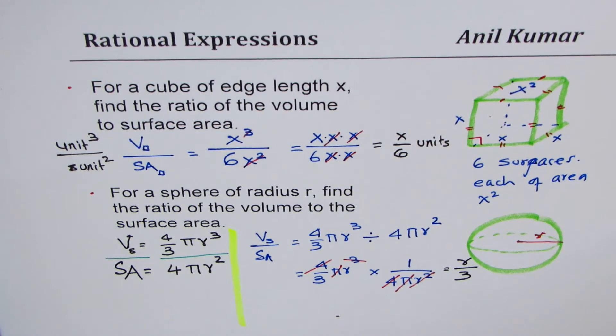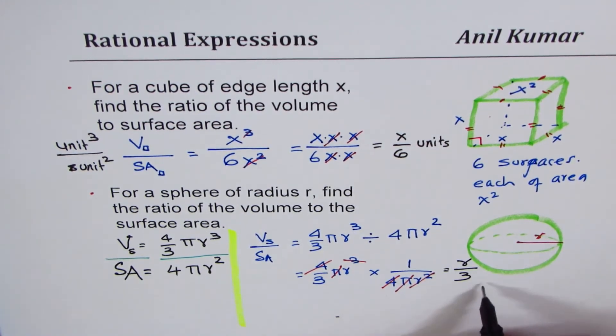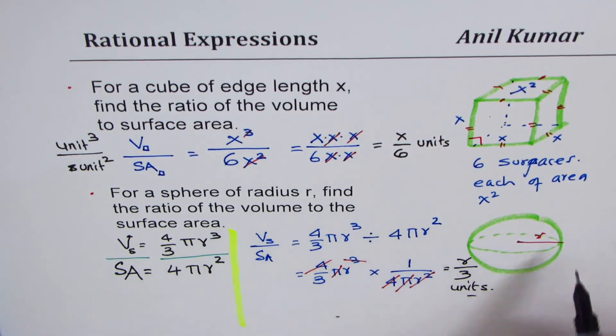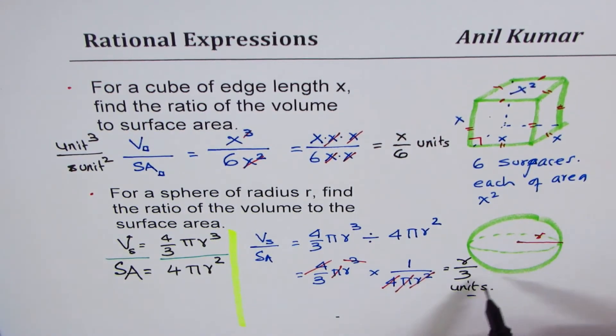And the units again will be just units. It's a good idea to think in terms of units. If I say r centimeters, then this ratio will have a unit, which will be centimeters.